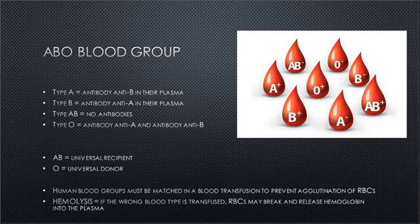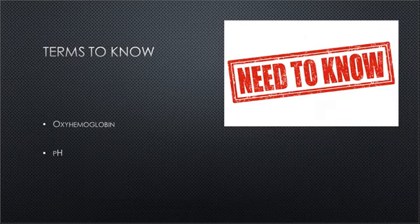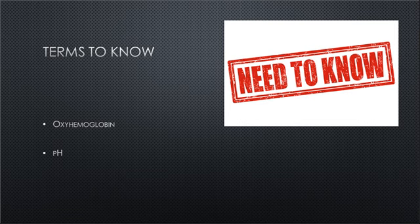Some other terms to be aware of: oxyhemoglobin. As blood circulates through the lungs, oxygen diffuses into the blood and into the red blood cells specifically, where it combines with hemoglobin to form oxyhemoglobin. pH is the measure of the acidity or alkalinity of a solution. A pH of 7 is considered neutral.